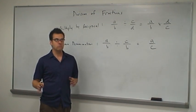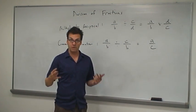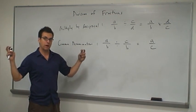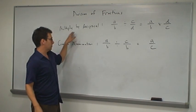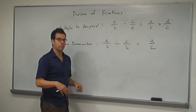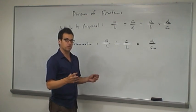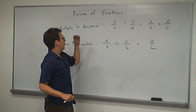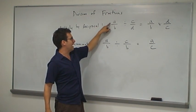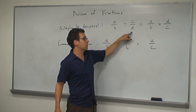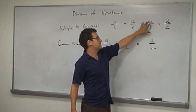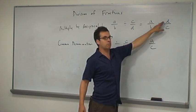It may seem that we've learned two different methods for dividing fractions. On the one hand, we have what we're calling the multiply by the reciprocal of the divisor method. Using algebra to concisely convey these rules: if we want to divide the fraction A over B by the fraction C over D, we multiply by the reciprocal of the divisor — so we take A over B and multiply by D over C.